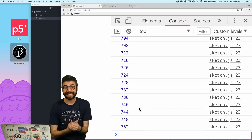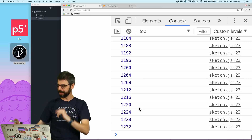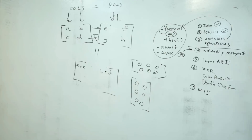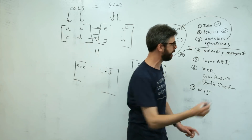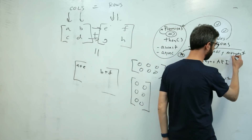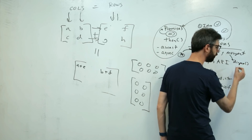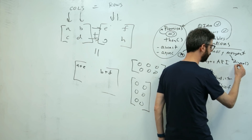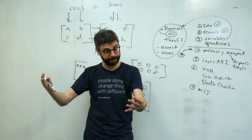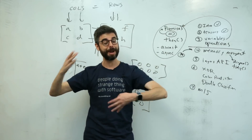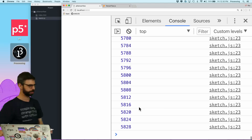The good news is there is a way to get rid of tensors that you don't need anymore. There are two functions I want to talk about as they relate to memory management. There is the function called dispose, and there is the function called tidy. They clean up memory that's not used, but they do it in a different way.